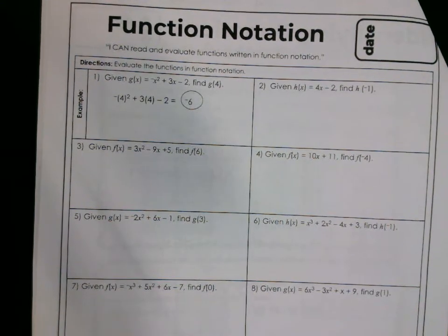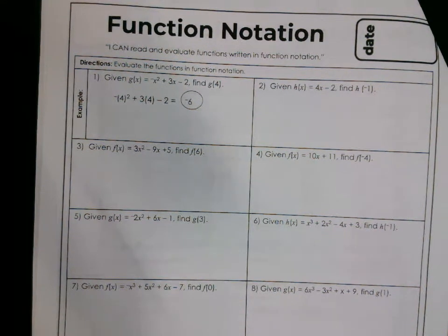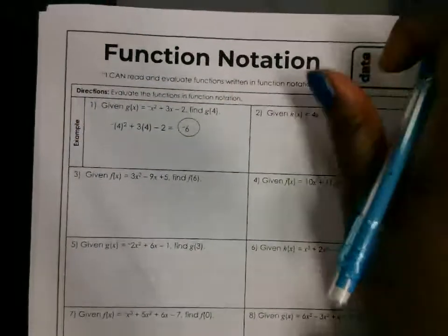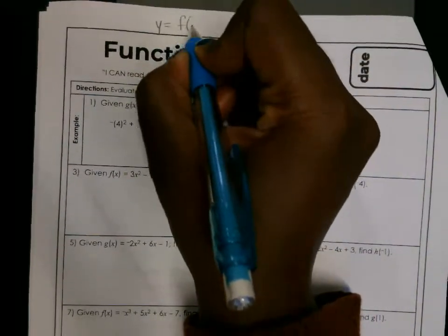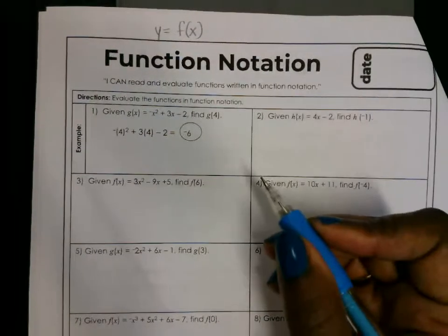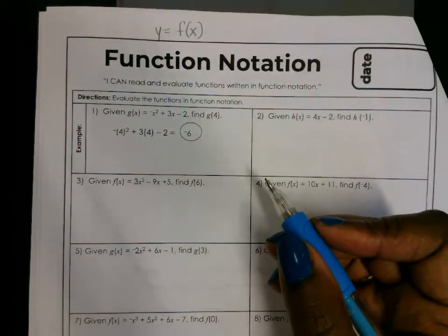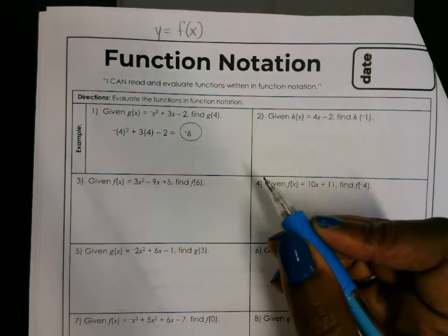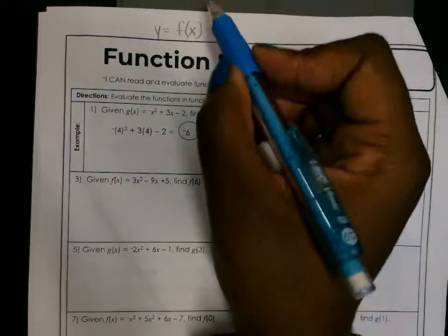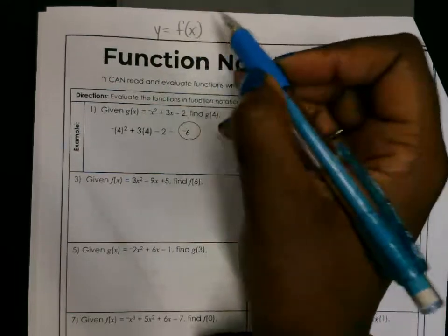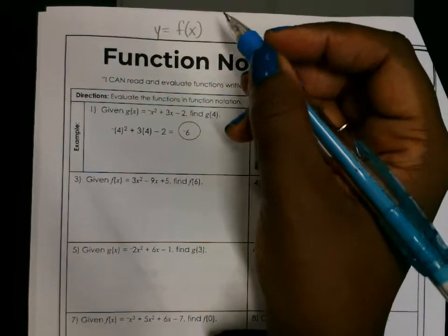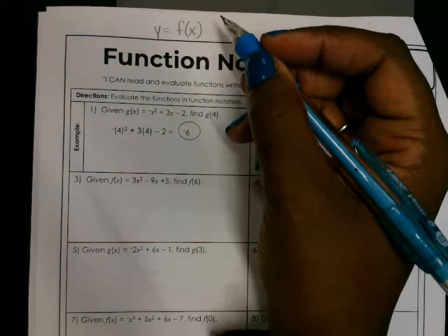Alright class, today's homework help is on function notation. Remember when you're writing an equation in function notation, you're replacing y with f of x. This is another way, or a synonym, for y. The number that we put in the place of where you see x is the value of x. So this is another way to write an equation.